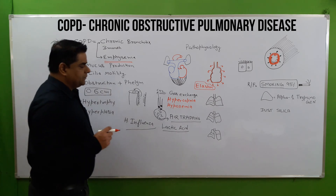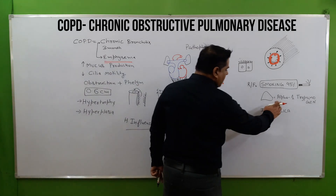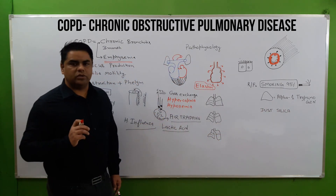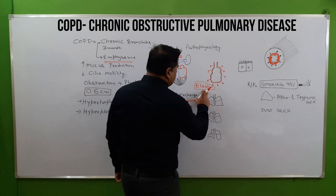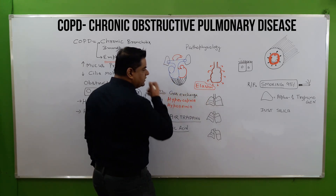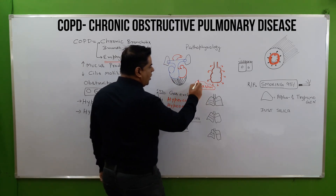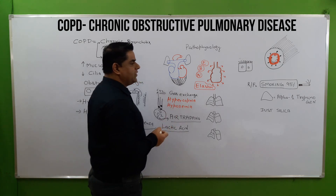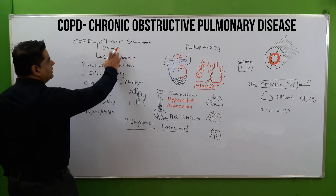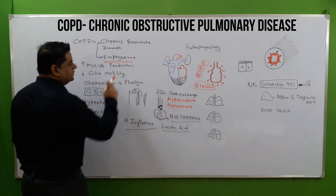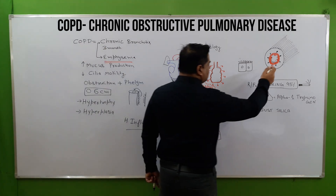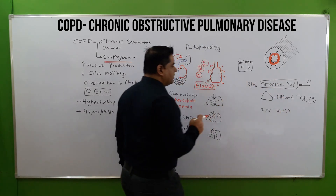Our liver produces alpha-1 trypsinogen, which protects this elastin layer from neutrophils, basophils, and eosinophils. Whenever there is emphysema, COPD, or chronic bronchitis, there is accumulation of dust particles, silica, and bacteria.